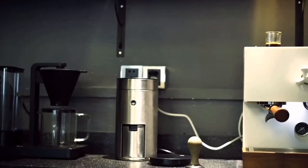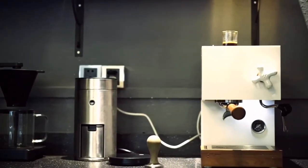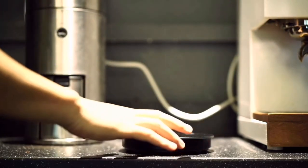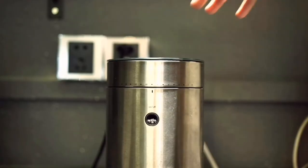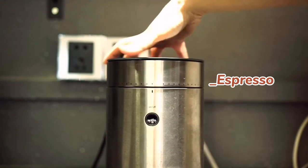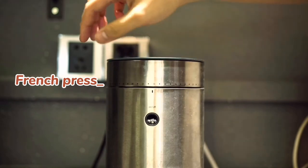Here I'm using a Wilfa Uniform Grinder. I like it a lot because it comes with an electric scale, and it's got a wide range of grind settings that covers nearly all kinds of coffee from espresso to french press. That's exactly what I need.